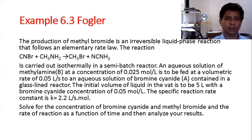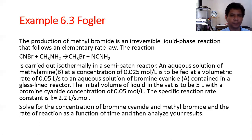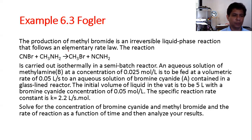This is from Fogler, Example 6.3. The production of methyl bromide is an irreversible liquid phase reaction following an elementary rate law. The reaction is CNBr (bromine cyanide) plus CH3NH2 (methylamine) producing CH3Br (bromomethyl) and another product. This is carried out isothermally in a semi-batch reactor. An aqueous solution of methylamine at a concentration of 0.025 mole per liter is to be fed at a volumetric flow rate of 0.05 liter per second.